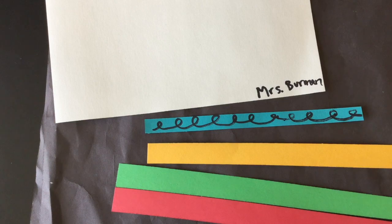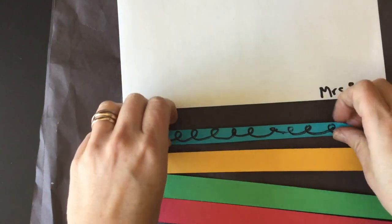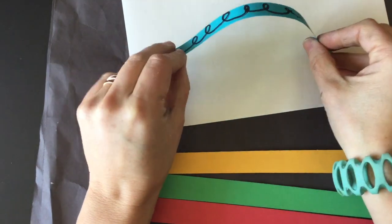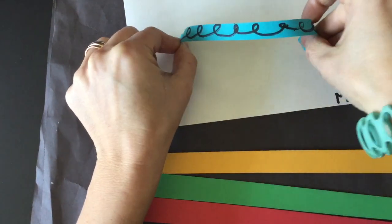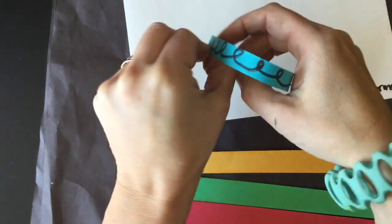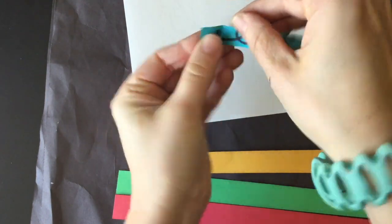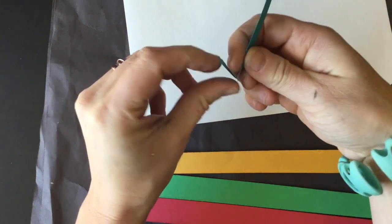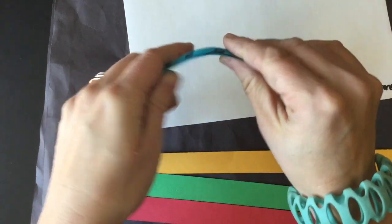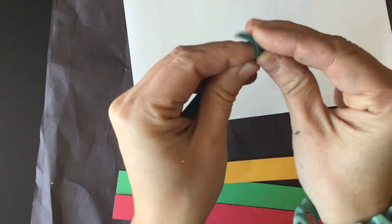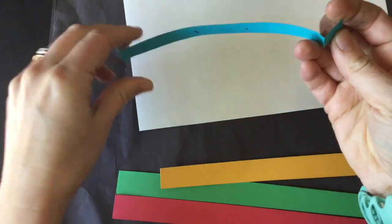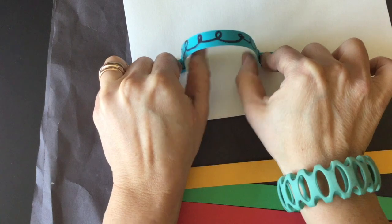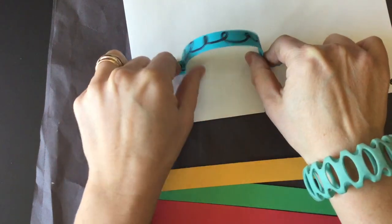Now I want to make this pop out three-dimensionally so I need to glue it down in a way that it can come out from the paper. It would be really tricky to glue that little edge. So I need to fold it to make a foot. Just like, can you imagine standing on your legs without feet? That would be really tricky. So we need to fold it to make little feet for the ends of our paper strip. Fold it to make a little foot. Now this has a little foot. I'm gonna be able to glue the feet down so that my paper strip comes out three-dimensionally.